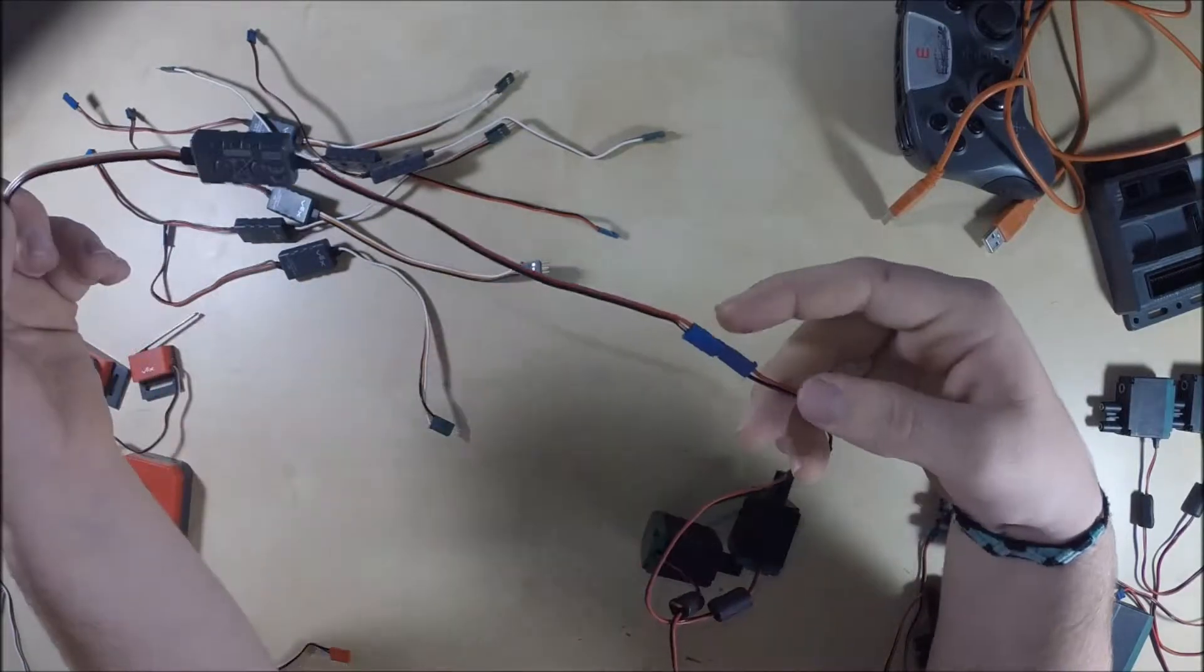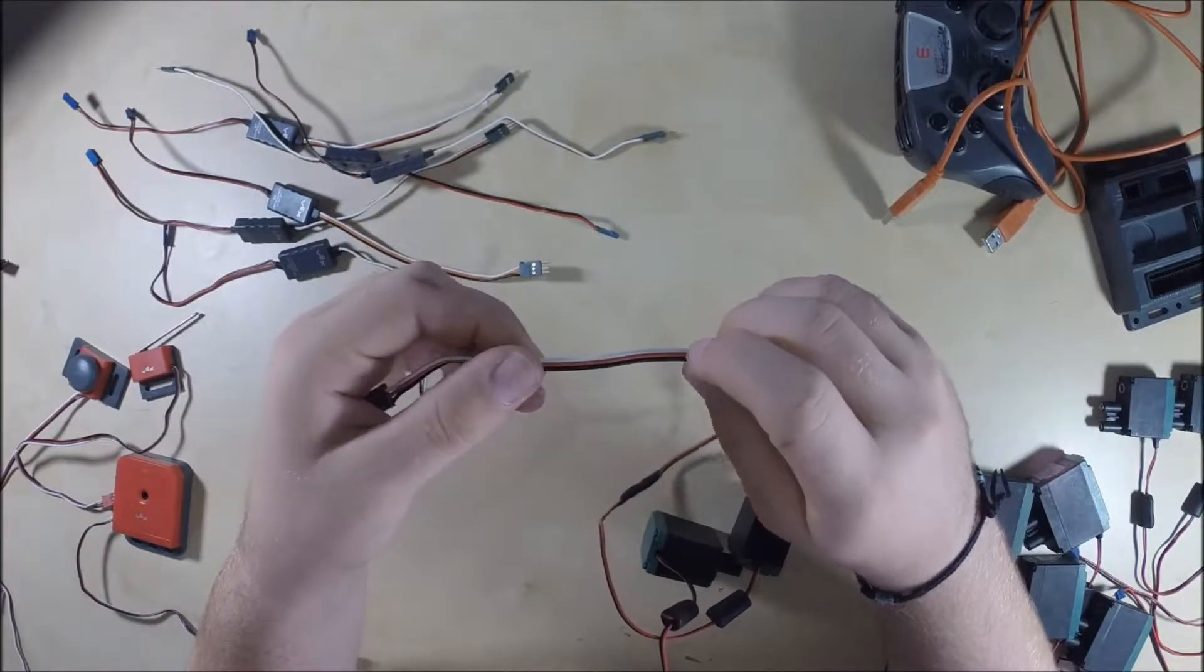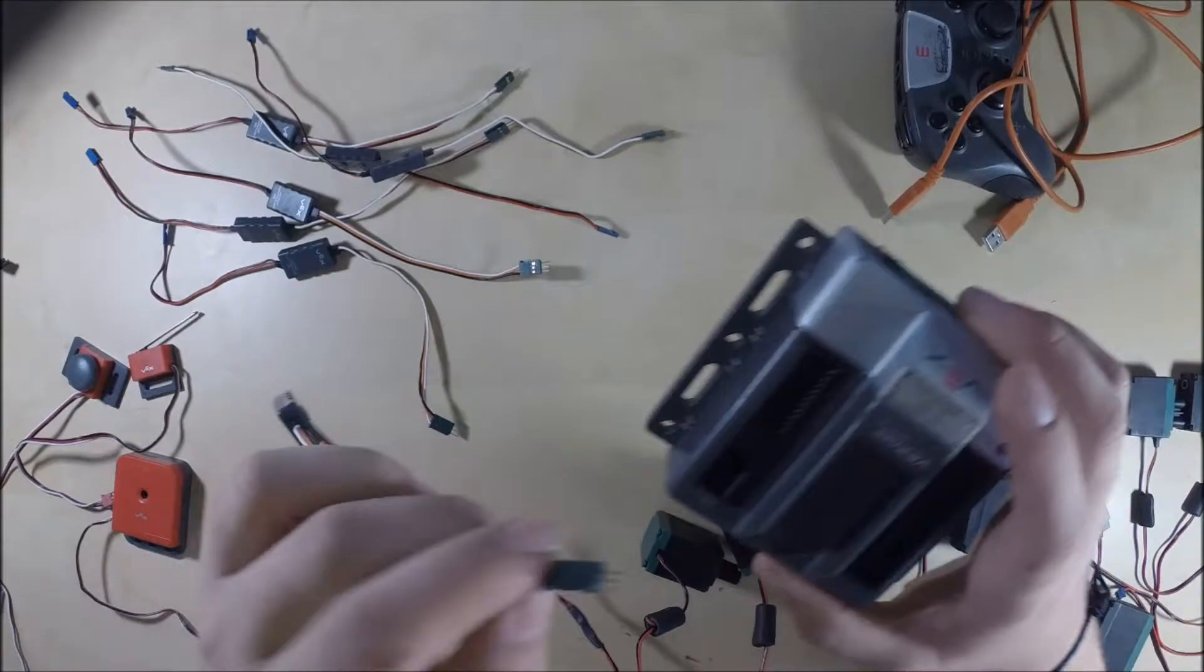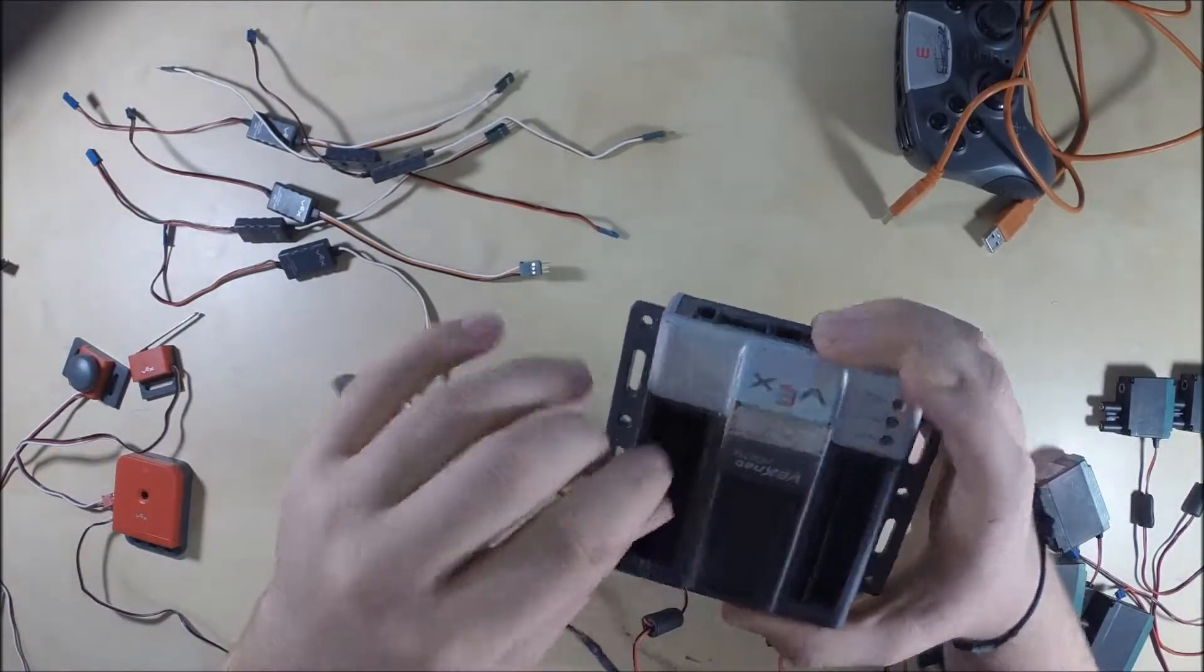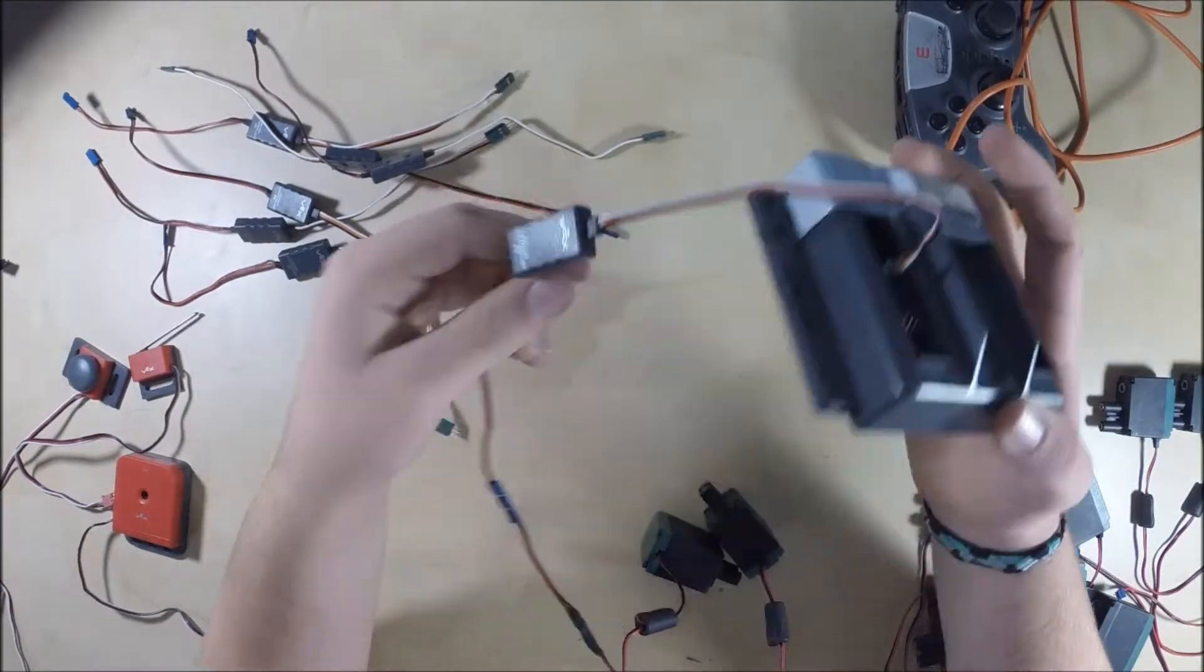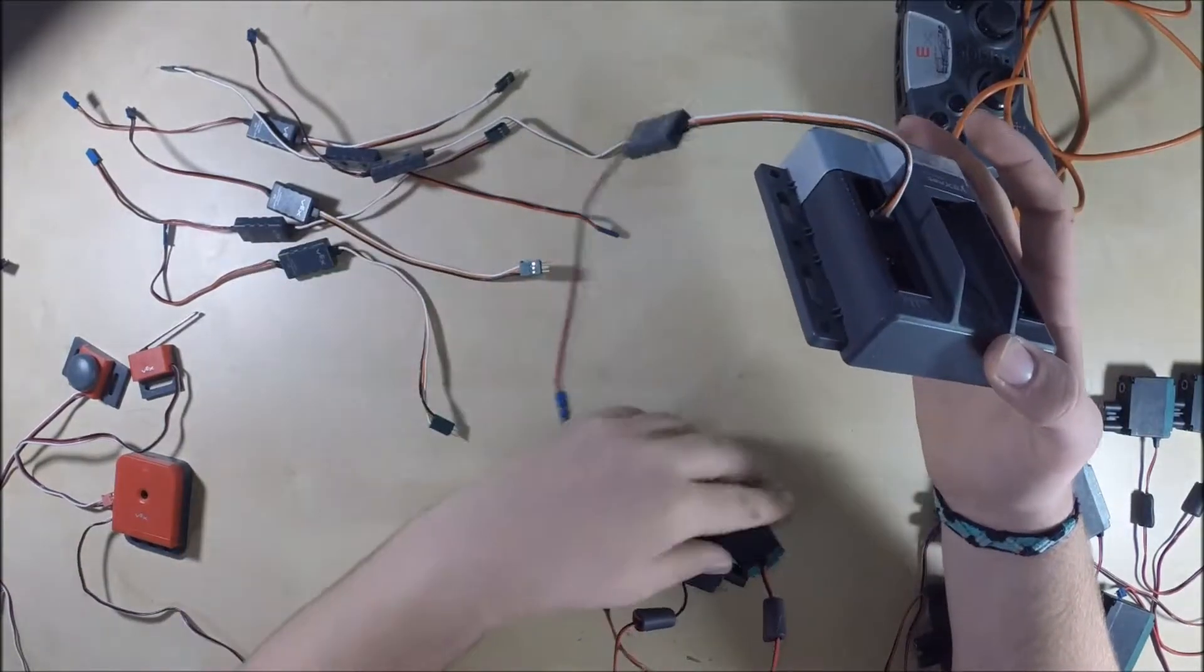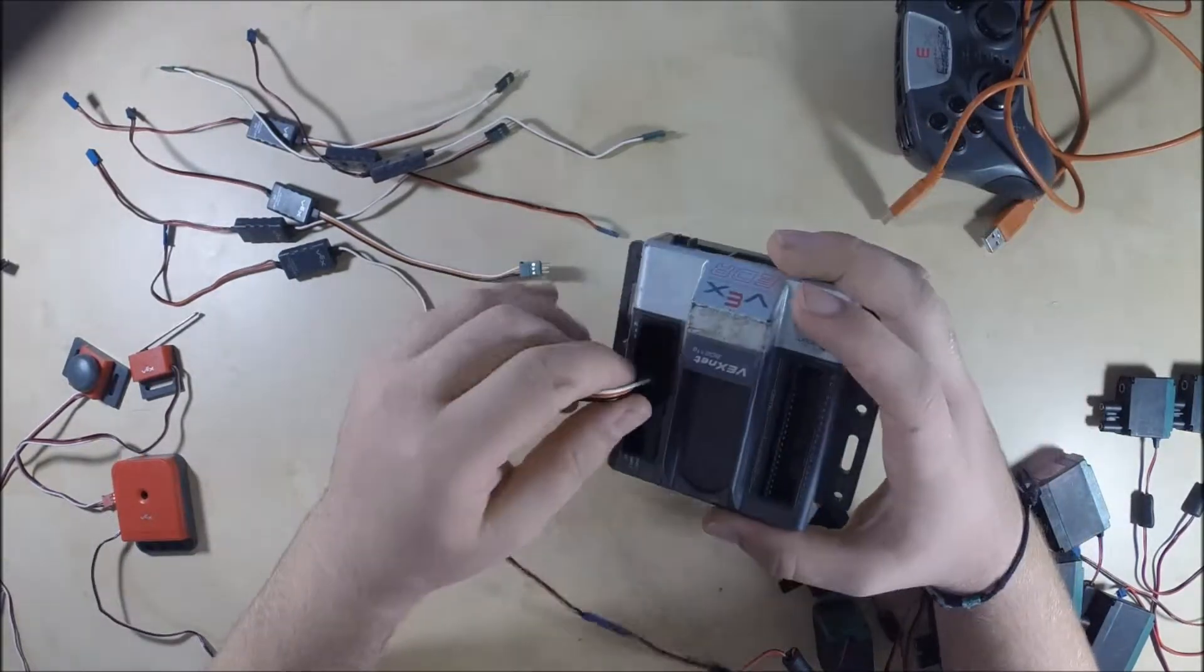So you can see we went from a positive, negative—red and black—to a positive, negative, and signal. Signal's the yellow. So then what you do is you can take that and that can plug directly into your cortex. So now it takes a signal from the cortex, converts it into two wires to drive your motor. We'll get more into that later.